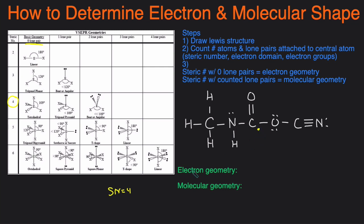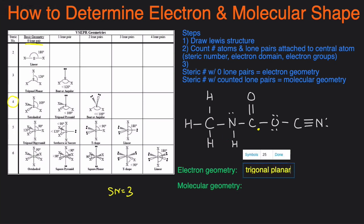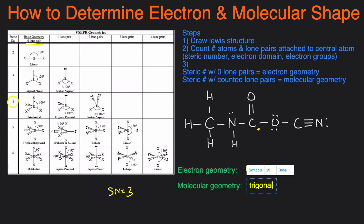Next we'll look at a carbon. The first step is to determine the steric number — how many atoms and lone pairs are attached to that carbon. It's attached to 1, 2, 3 atoms and no lone pairs, so its steric number is 3. A common mistake students make is counting the individual number of bonds instead of the atoms — if you did that you'd get steric number 4, but the correct answer is 3. With steric number 3 and zero lone pairs, the electron geometry is trigonal planar. Since it actually has zero lone pairs, the molecular geometry is also trigonal planar.